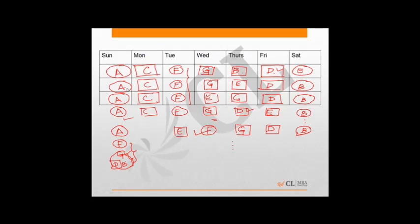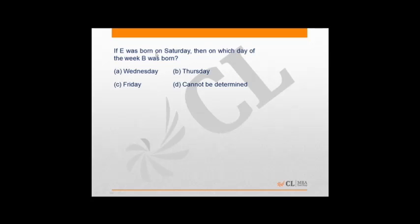Next question: who among B, G, and E is definitely male? E may be female or male, and B may also be female or male. But G will definitely be a male person in all cases. So G is definitely male — the answer is option B.